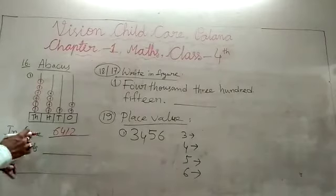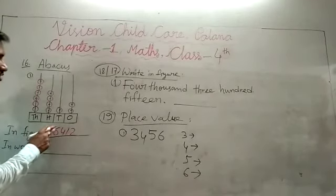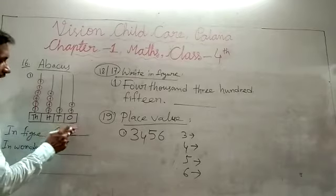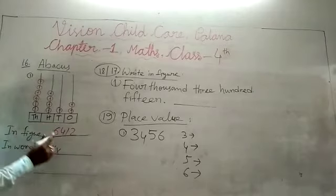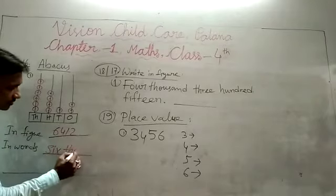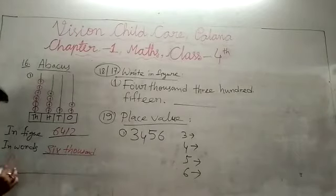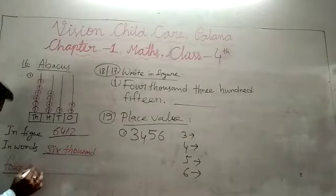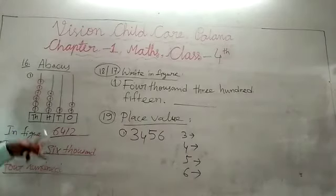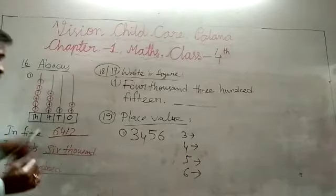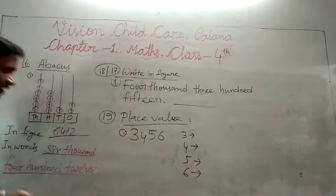So how to write in words? 6,412. 6,000 ki jagah pe 6 hai. So 6,400... 6,412. Understand, students?